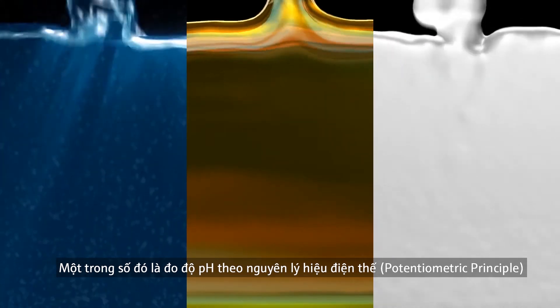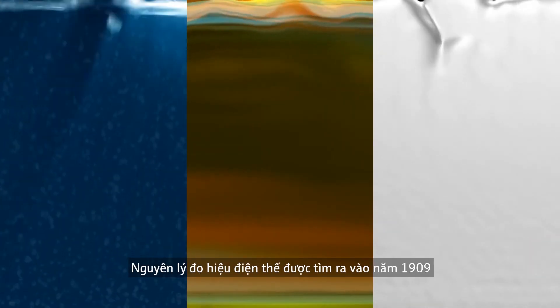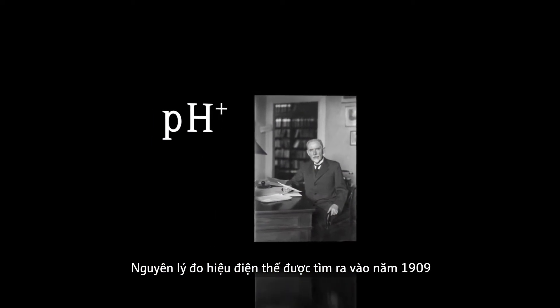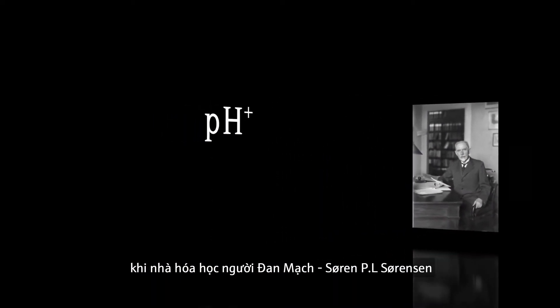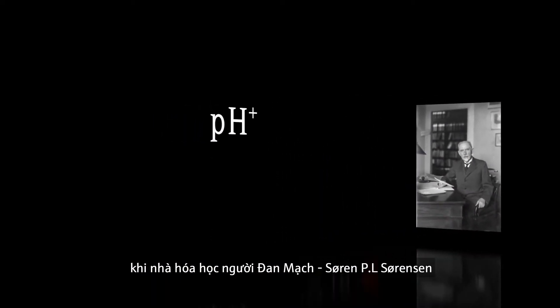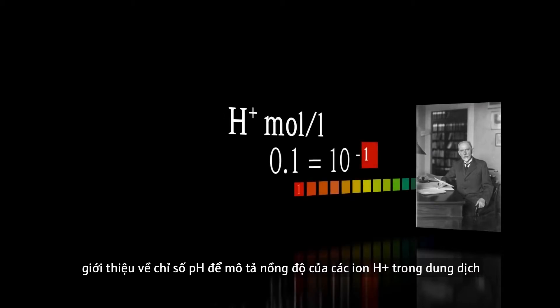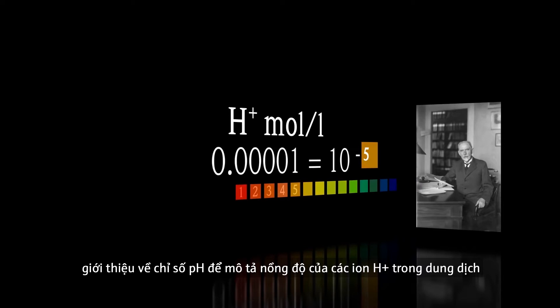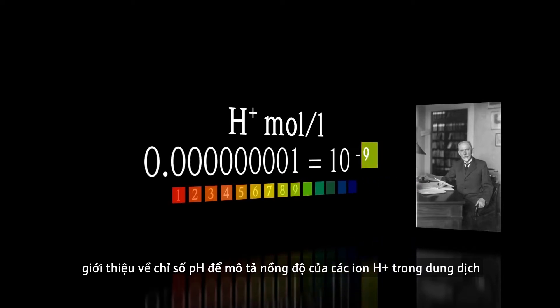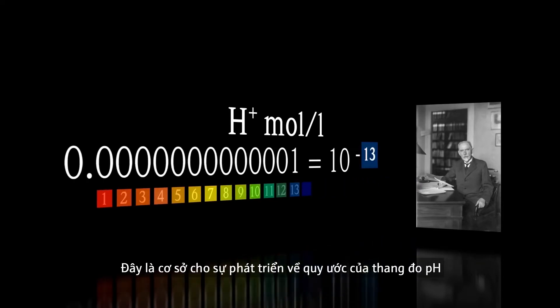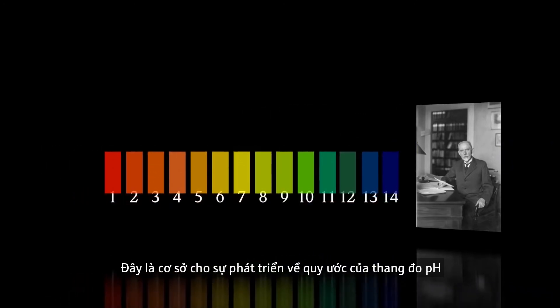According to the potentiometric principle, the principle can be traced back to 1909, when the Danish chemist Søren Sørensen introduced the so-called hydrogen ion exponent pH to describe the concentration of hydrogen ions in a solution. This was the basis for the development of the conventional pH scale.